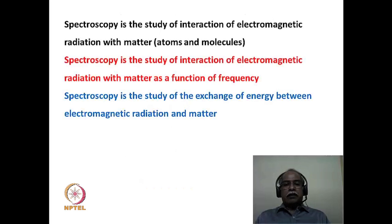Spectroscopy in the broadest term is defined as the study of interaction of electromagnetic radiation with matter — and when we talk about matter, we are dealing with atoms and molecules. Essentially, the interaction of atoms and molecules with electromagnetic radiation is what constitutes the term spectroscopy. Spectroscopy is the study of this interaction as a function of frequency, because whenever we record a spectrum, we are scanning various frequencies and recording the response of the material for those various frequencies.